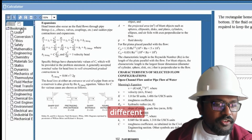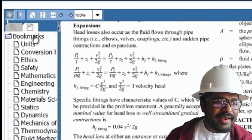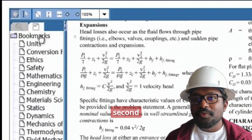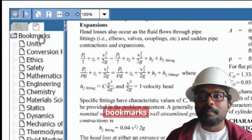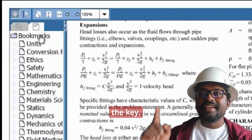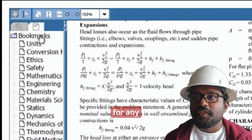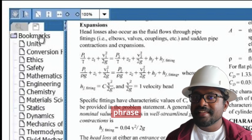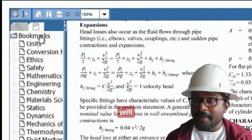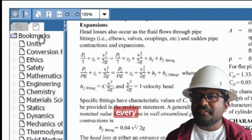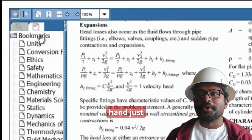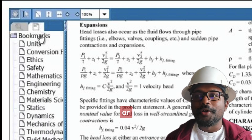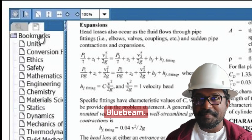So it has two different tabs. One is the search tab and the second one is the bookmarks tab. This search tab is the key. You can search for any word or phrase and it will bring up every mention of that word in the handbook — just like Adobe PDF or Bluebeam.